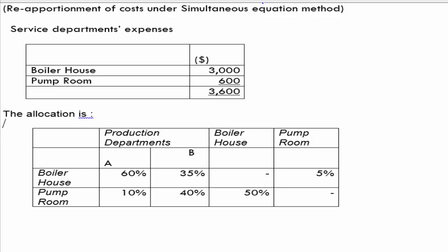We have this case study. The service department expenses are: the boiler house is spending $3,000 and the pump room is spending $600, so total service department expenses are $3,600. There are two production departments, A and B. The boiler house renders 60% of its service to production department A, 35% to production department B, and 5% to the other service department, the pump room. Similarly, the pump room renders 10% of its services to production department A, 40% to production department B, and 50% to the boiler house.